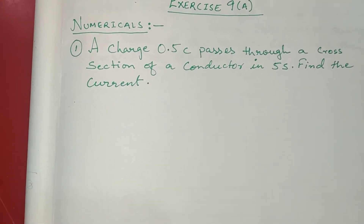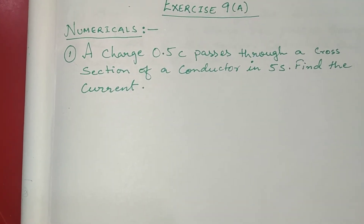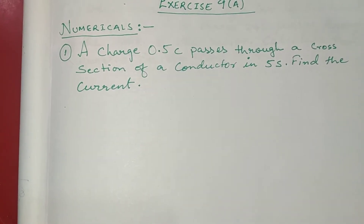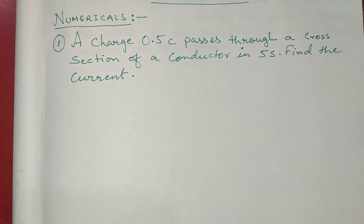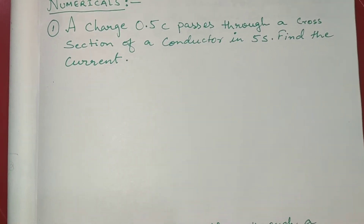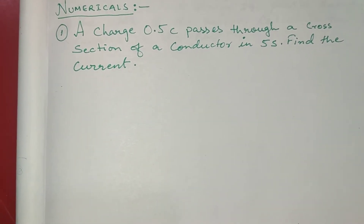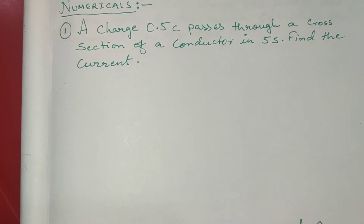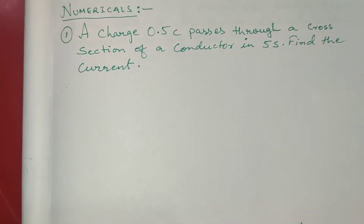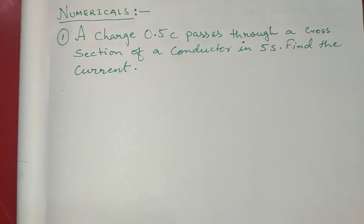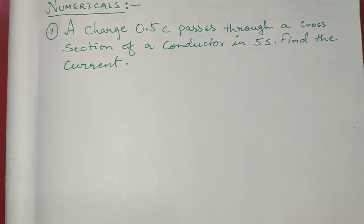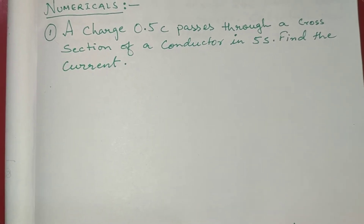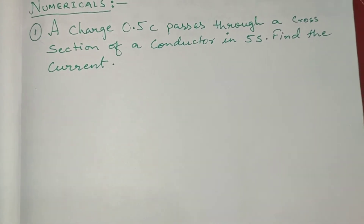Hello everyone. In this AV, we would be trying to solve exercise 9A numericals. The first question from the numerical section says: a charge of 0.5 Coulomb passes through a cross section of a conductor in 5 seconds. Find the current.